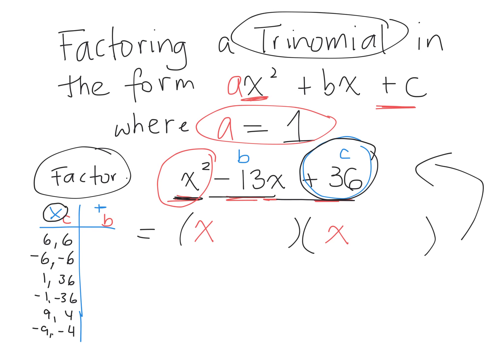So the first step is to figure out, and you can start to do this in your head. You don't have to make this little chart. Two things that multiply together to give me positive 36, but when I add them together, I'm looking for the one that adds up to negative 13. What's 6 plus 6? Positive 12. What's negative 6 plus negative 6? Negative 12. 1 plus 36, 37. Negative 1 plus negative 36, negative 37. 9 plus 4, 13. And negative 9 plus negative 4, negative 13. Which terms multiply together to give me positive 36, but add up to negative 13? So my factors are negative 9 and negative 4.